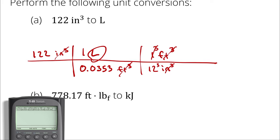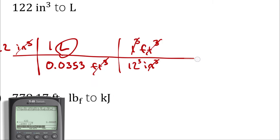So I pull up my calculator to perform the actual computation. 122 divided by 0.0353 times 12 raised to the cubed power. I see that I get 2.00005 liters — about 2.